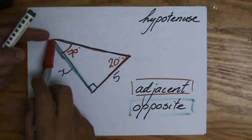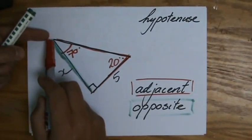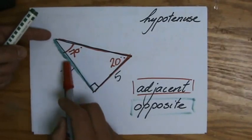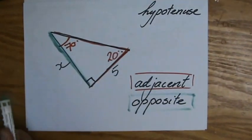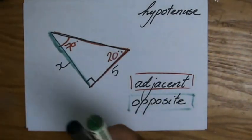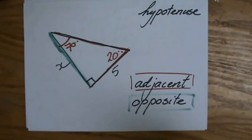However, now my adjacent will be x. It's touching me. It's next to me. And my opposite is 5. It's not touching me. So, you always, when you are working with trigonometry, really have to physically place yourself in that angle.